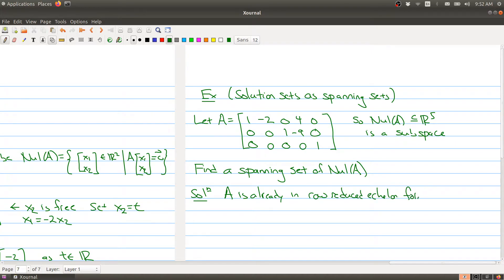So A is already in row reduced echelon form. Because of that, I can actually read off the free variables very easily. So x2 and x4 are free, which implies that x2 is R and x4 is S.